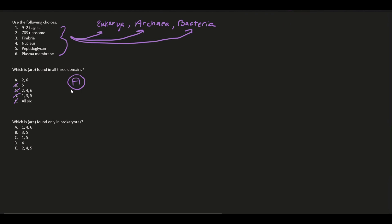Which of the following is found only in prokaryotes? Prokaryotes do not have a nucleus, so we eliminate 4. We're left with B and C. B is 3 and 5 — fimbria and peptidoglycan; C is 1 and 5 — 9+2 flagella and peptidoglycan. Prokaryotes do have fimbria, and peptidoglycan is found in prokaryotes. The answer is B: fimbria and peptidoglycan.